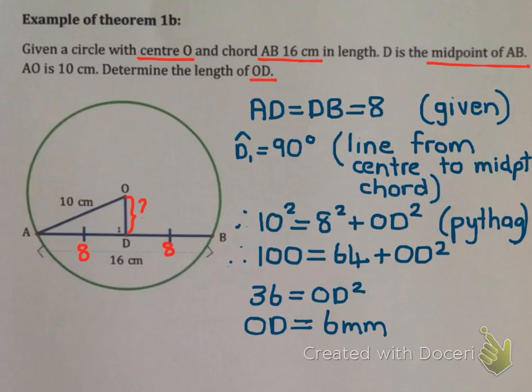I hope you see the difference between 1A and 1B. 1A is if you're given the center and you're given it's perpendicular, you can assume it's a midpoint. Whereas 1B is the opposite. If you're given a center and you're told it's a midpoint, you can assume it's perpendicular.